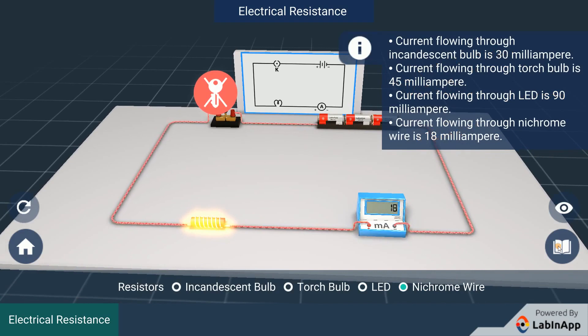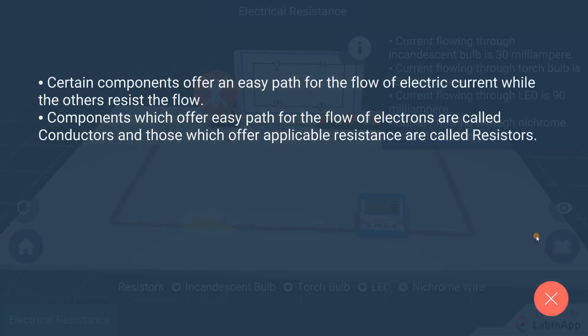We find that the ammeter readings are different for different components. From Ohm's law, we can see that the current is inversely proportional to resistance. Whenever the resistance is high, current flowing will be less. Certain components offer an easy path for the flow of electric current, while others resist the flow.